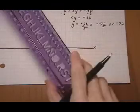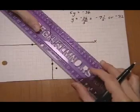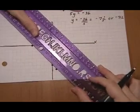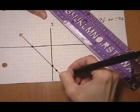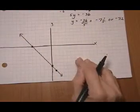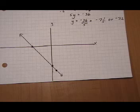And you break out the straight edge. Put a line through it. Arrows on both ends. And there we have our graph of the equation.